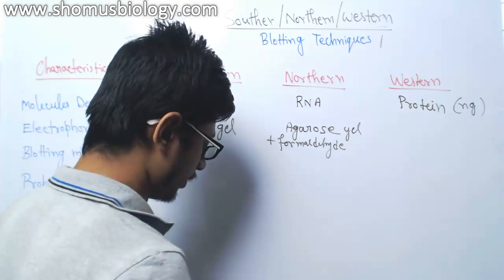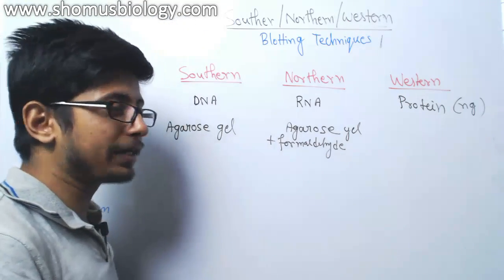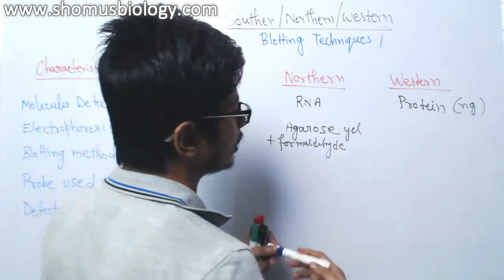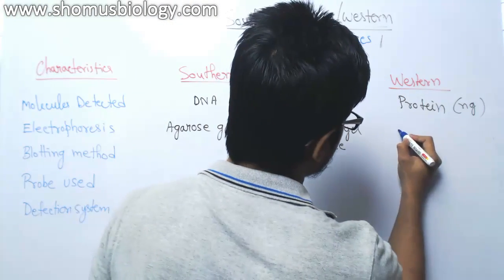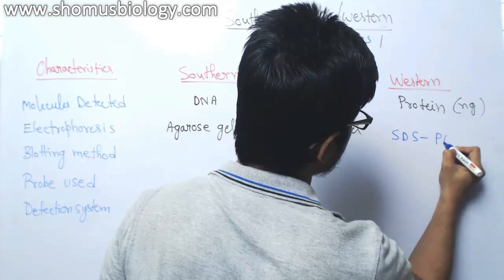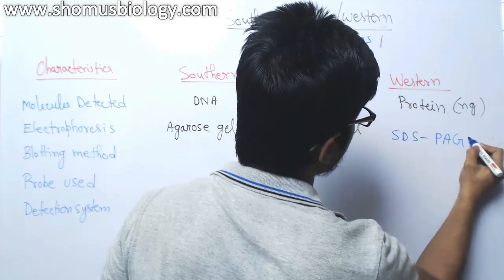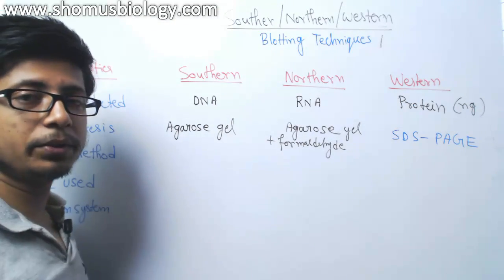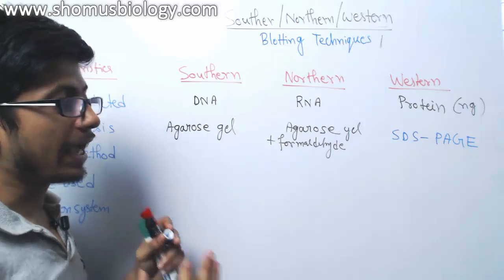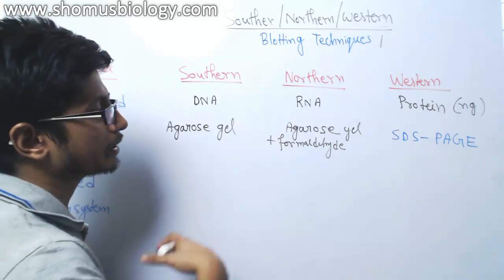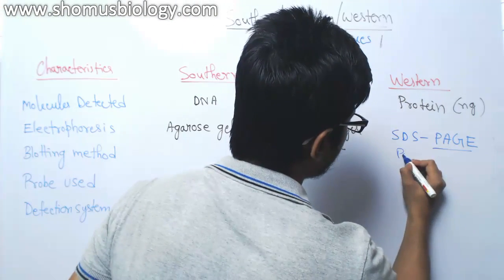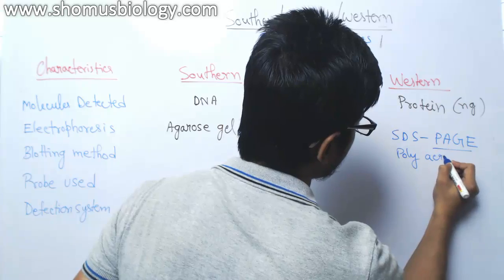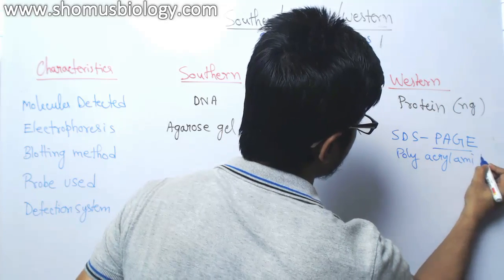In case of western blotting, we use a completely different type of gel — SDS-PAGE, which is a polyacrylamide gel. So in southern and northern blotting we use agarose gel, but in western blotting we use polyacrylamide gel.